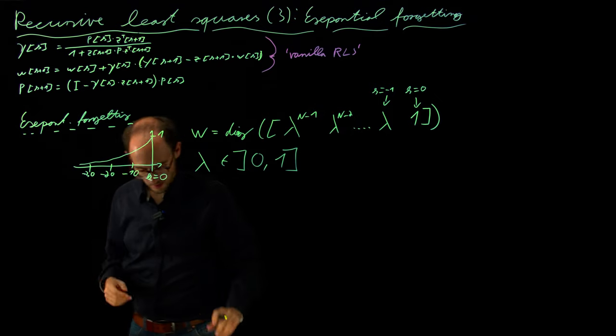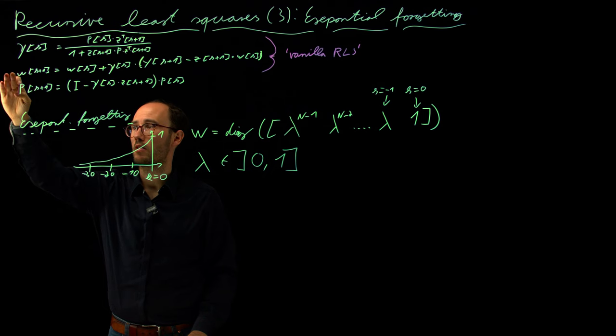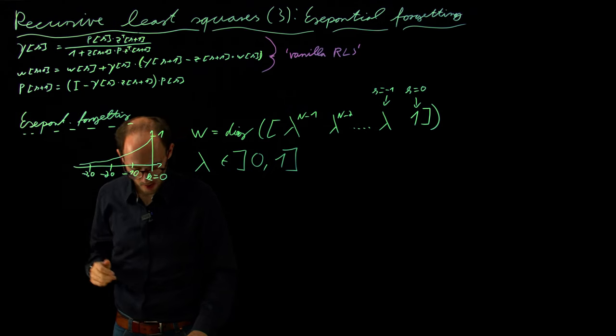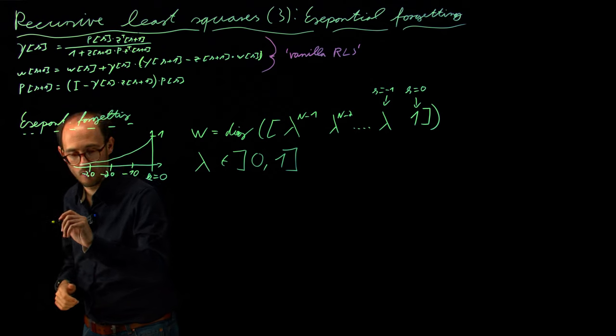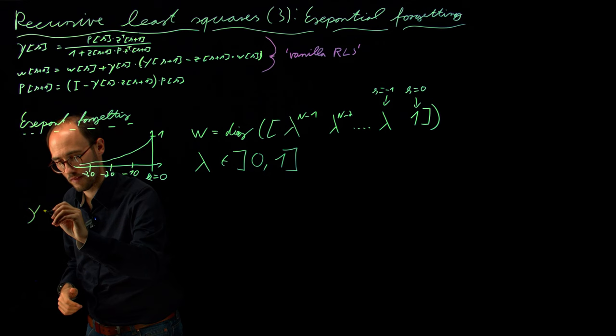So if you will go through the derivation, basically the three steps, so calculating the correction factor, the parameter update and the covariance update is practically the same and also the equations look very similar. So here our correction factor